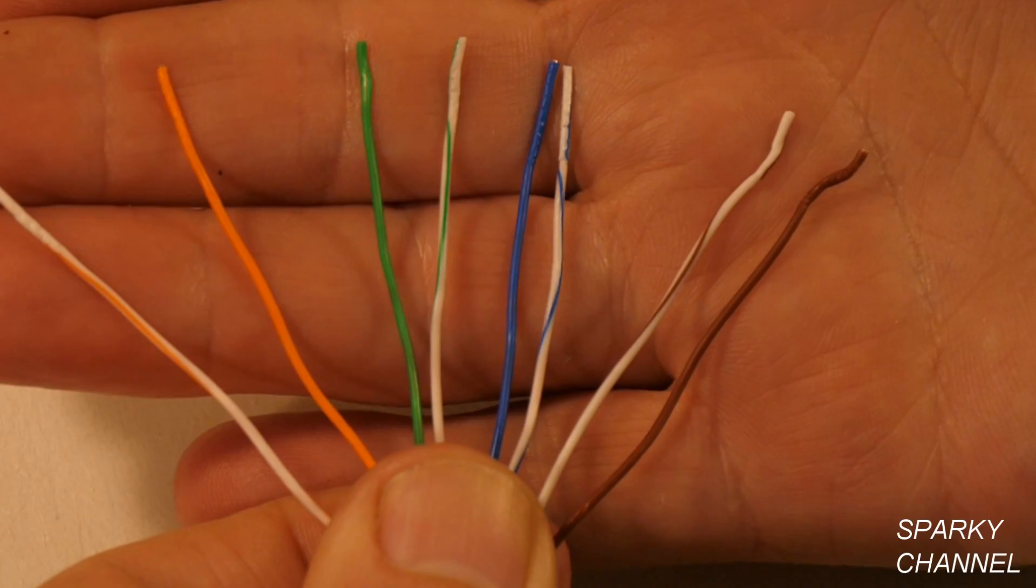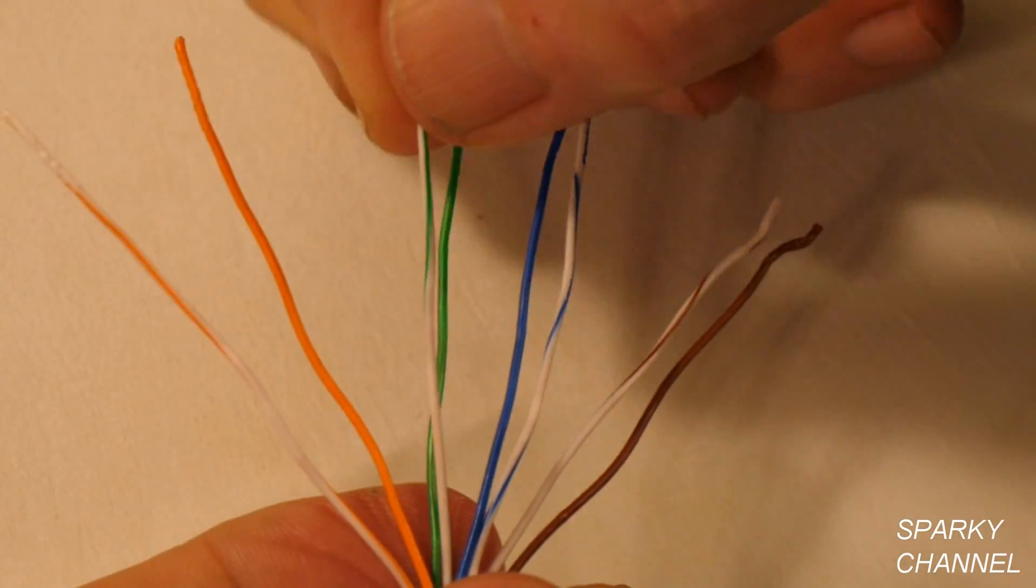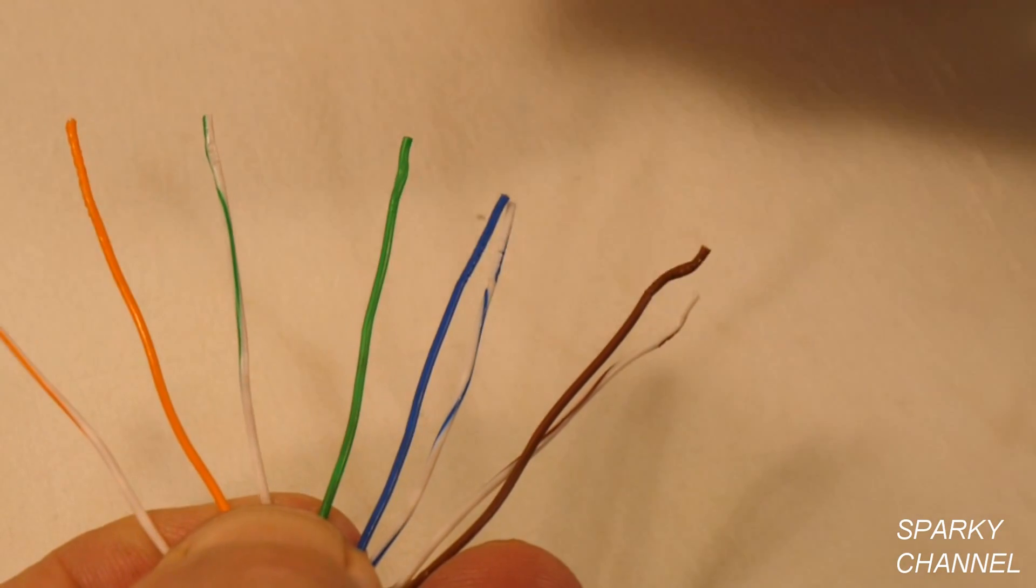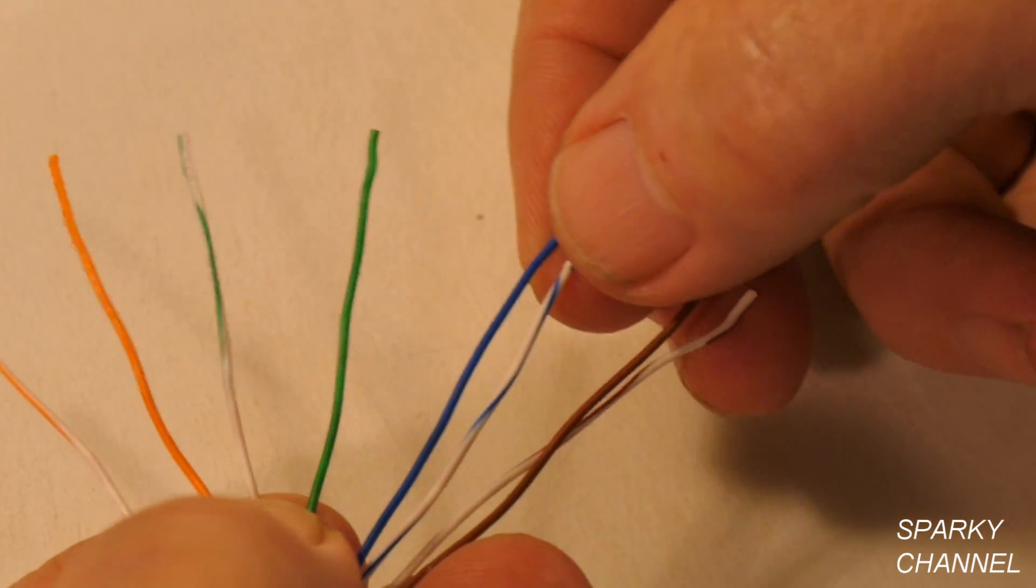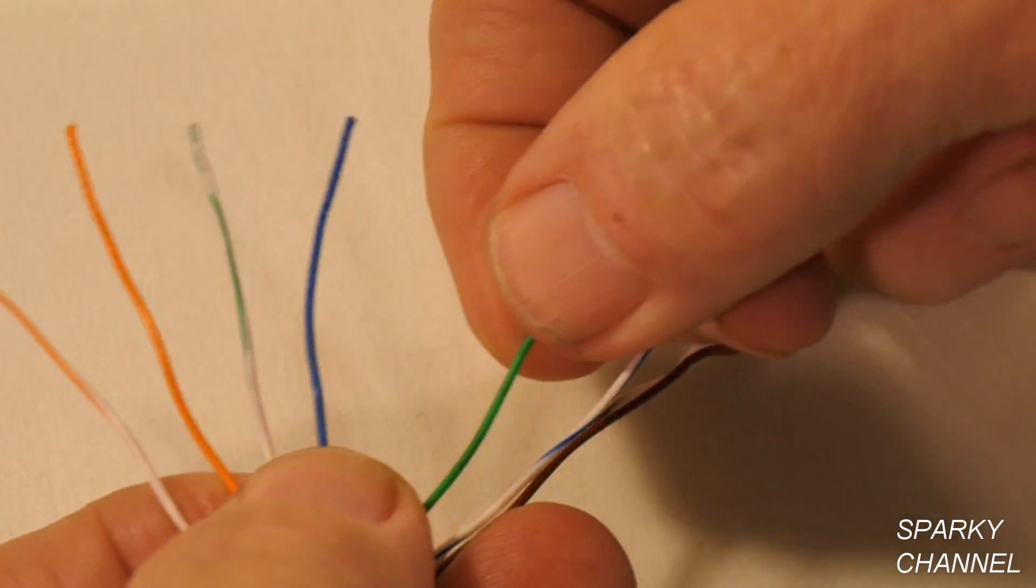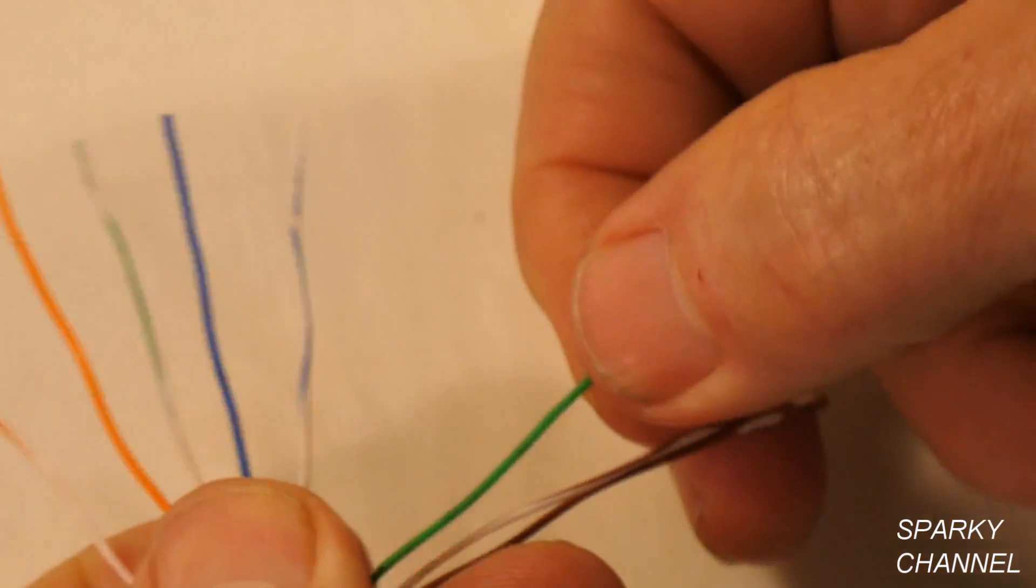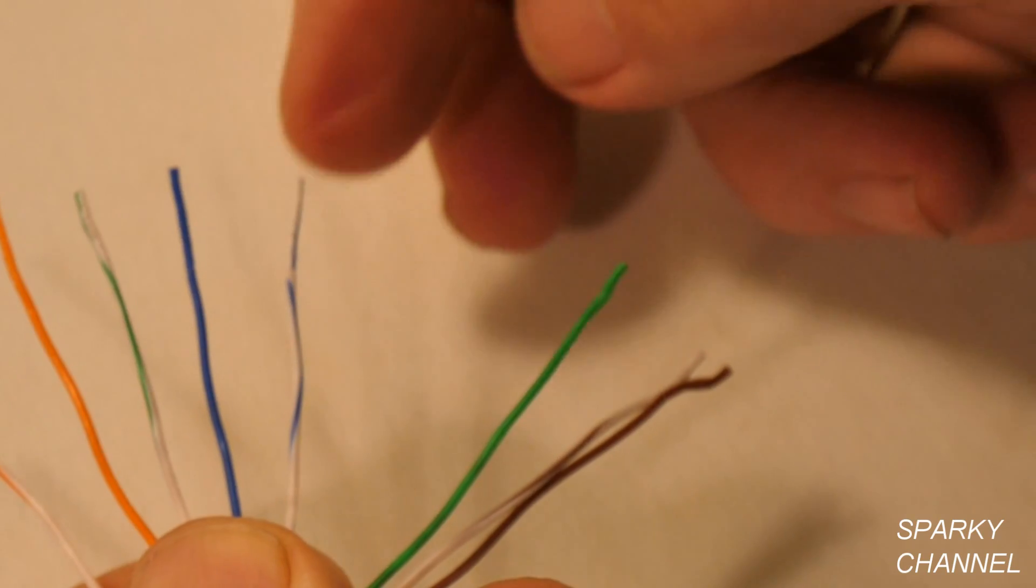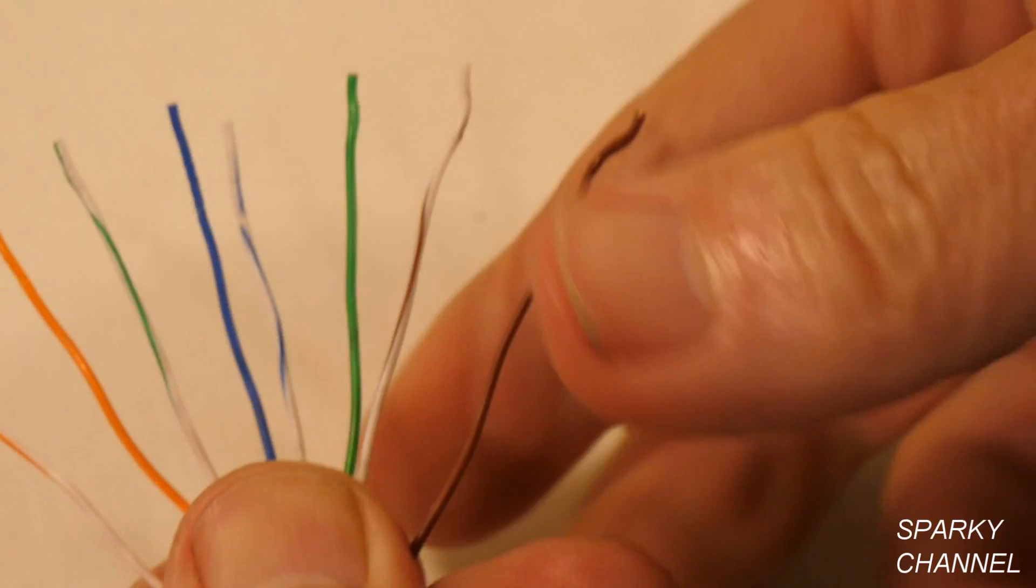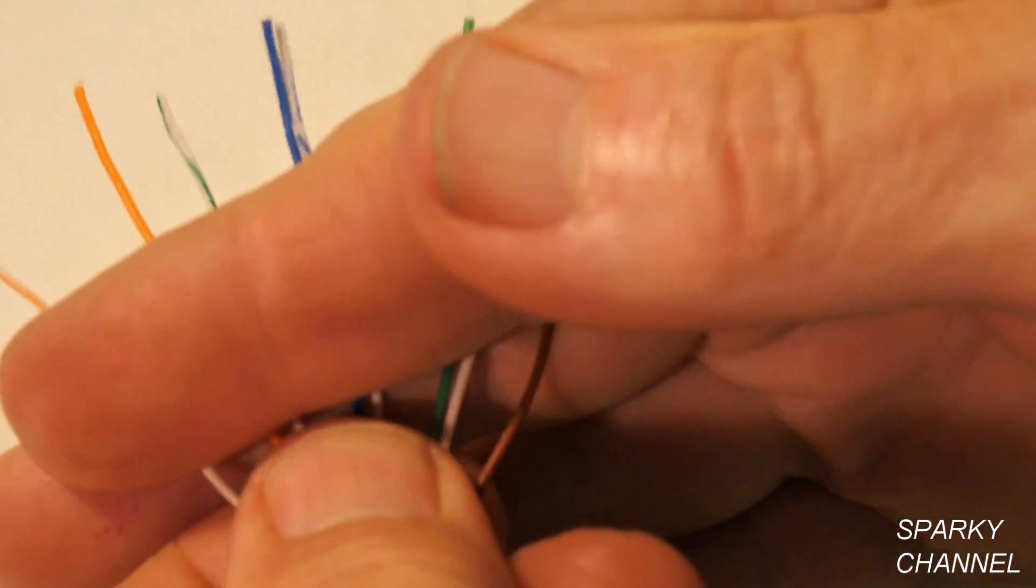So we're using T568B. And it starts out white, orange. Orange. White, green. Try and get it so it sits the best. White, green. And then you think it would be green. But no, it's blue. Blue's the next. You can just consult the chart. But you really should memorize this. If you're going to do it quite a bit. It'll just make it a lot easier. So you've got blue, white, blue, green. White, brown. Brown. So that's the T568B.